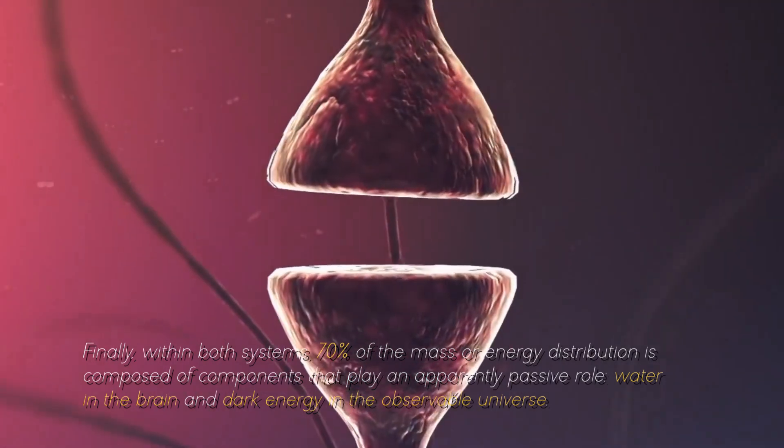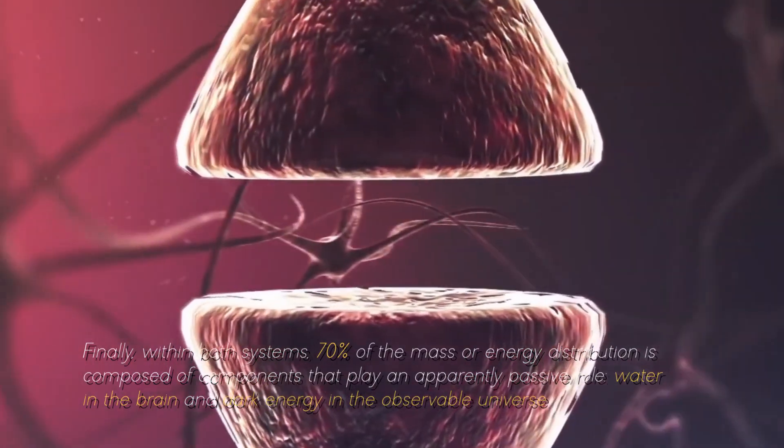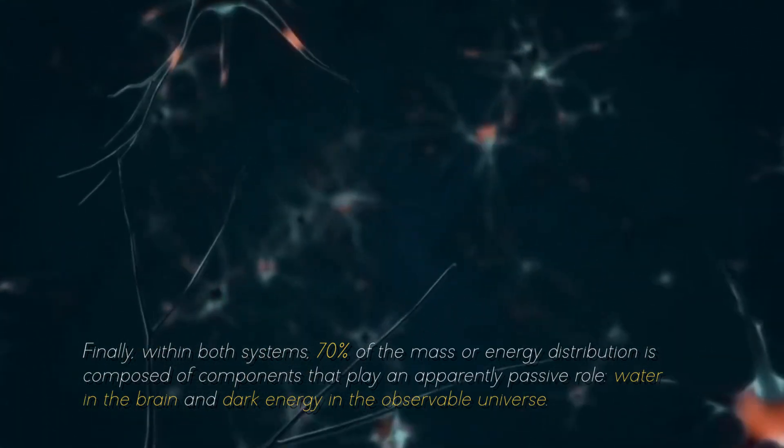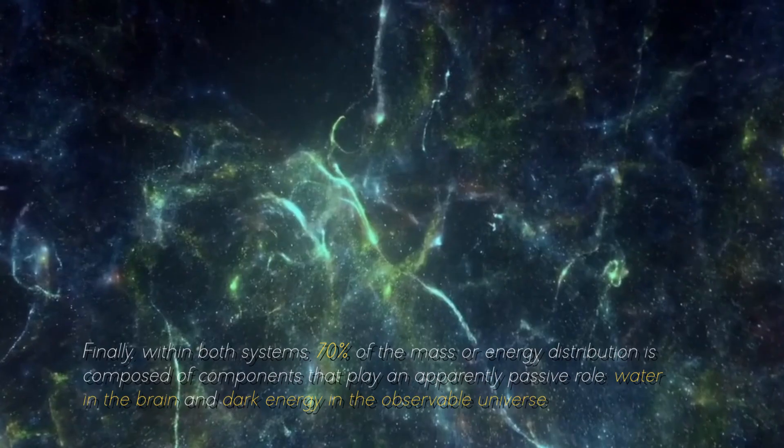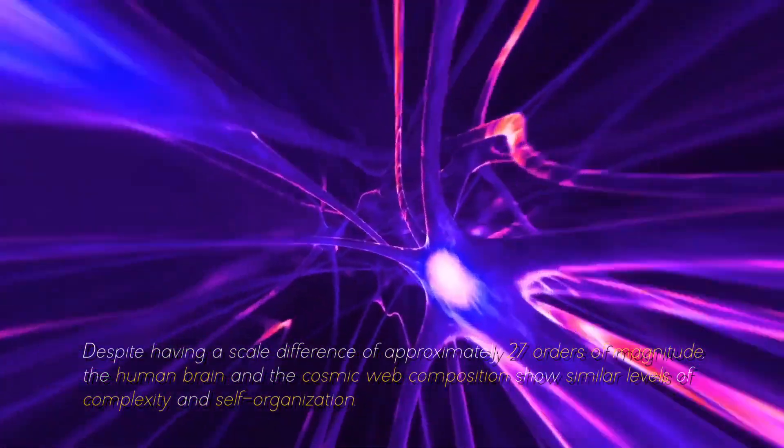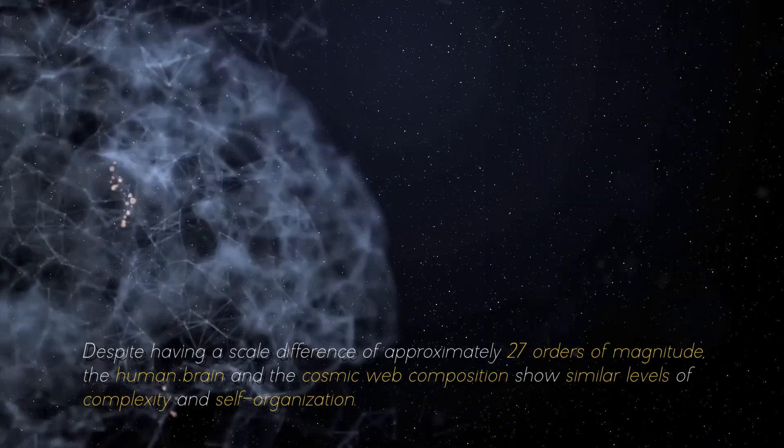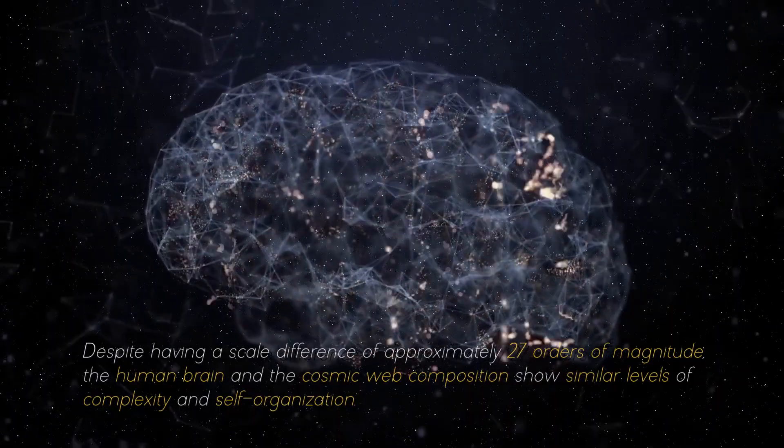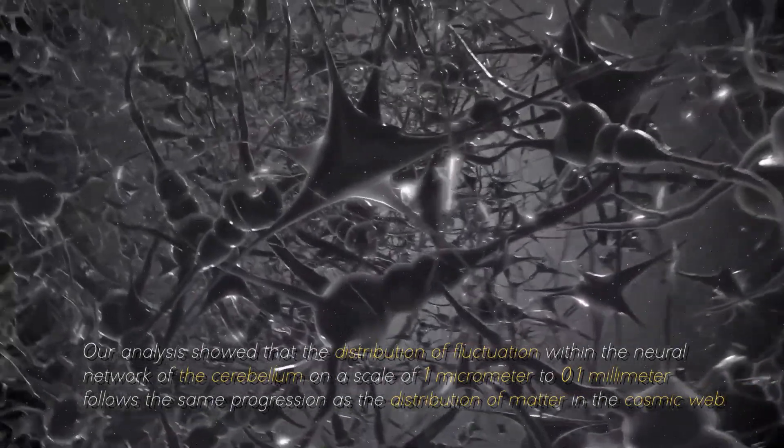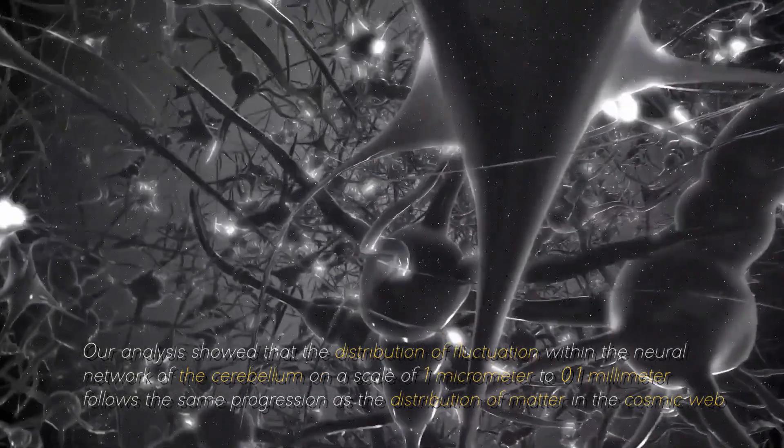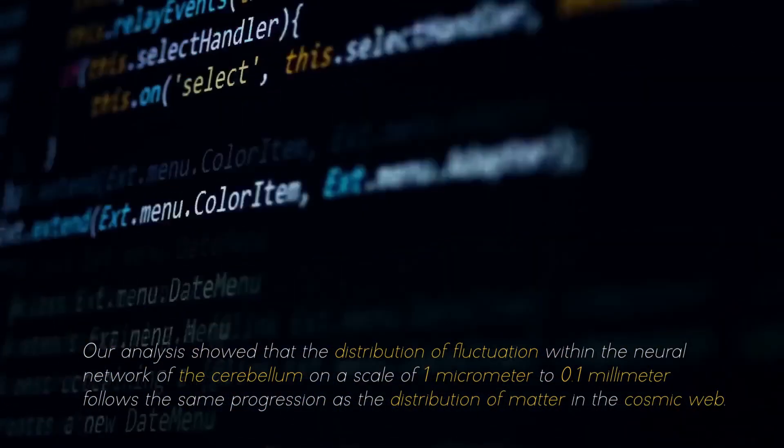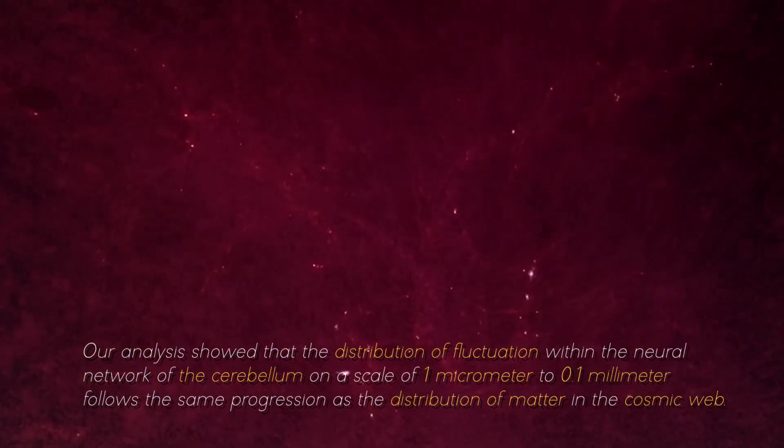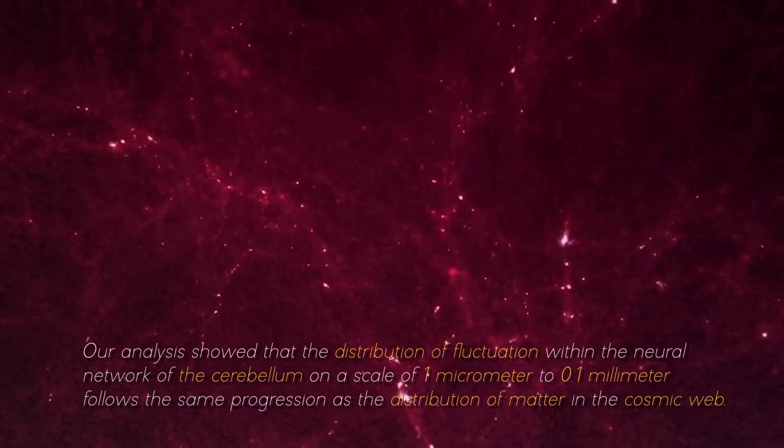Finally, within both systems, 70% of the mass or energy distribution is composed of components that play an apparently passive role, water in the brain and dark energy in the observable universe. Despite having a scale difference of approximately 7 orders of magnitude, the brain and the cosmic web composition show similar levels of complexity and self-organization. Our analysis showed that the distribution of fluctuation within the neural network of the cerebellum on a scale of 1 micrometer to 0.1 millimeters follows the same progression as the distribution of matter in the cosmic web, commented one of the researchers in charge of this project.